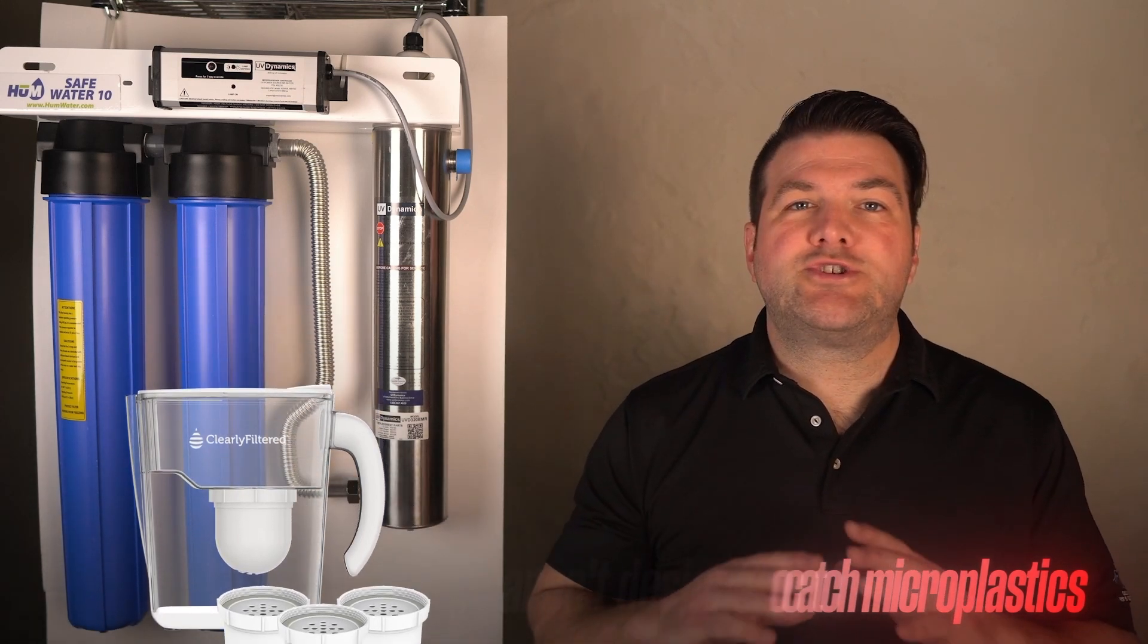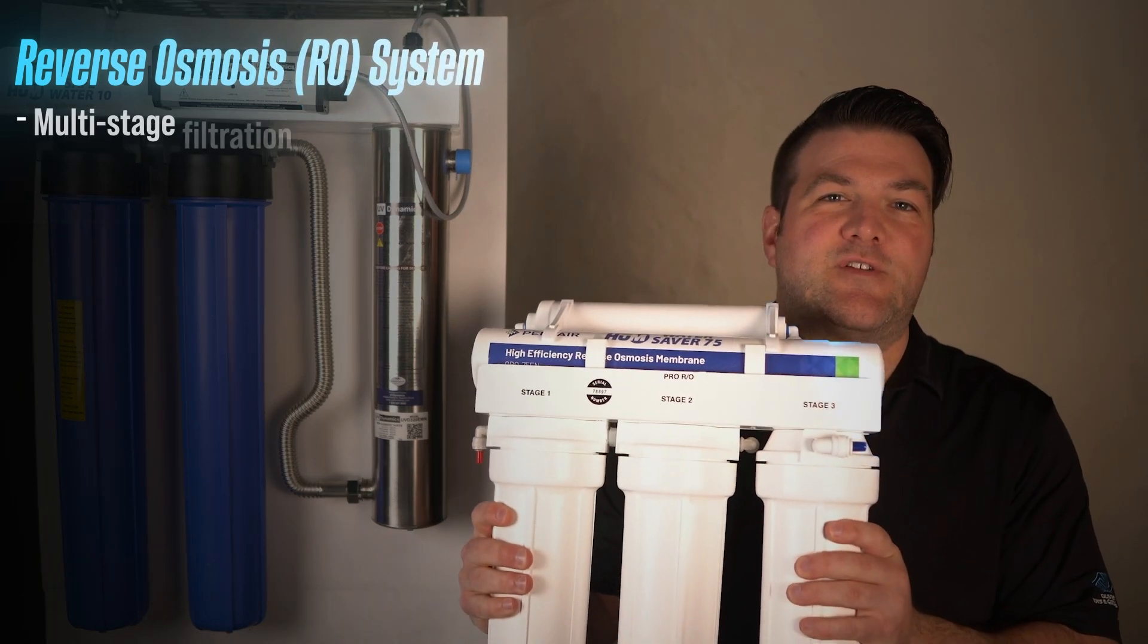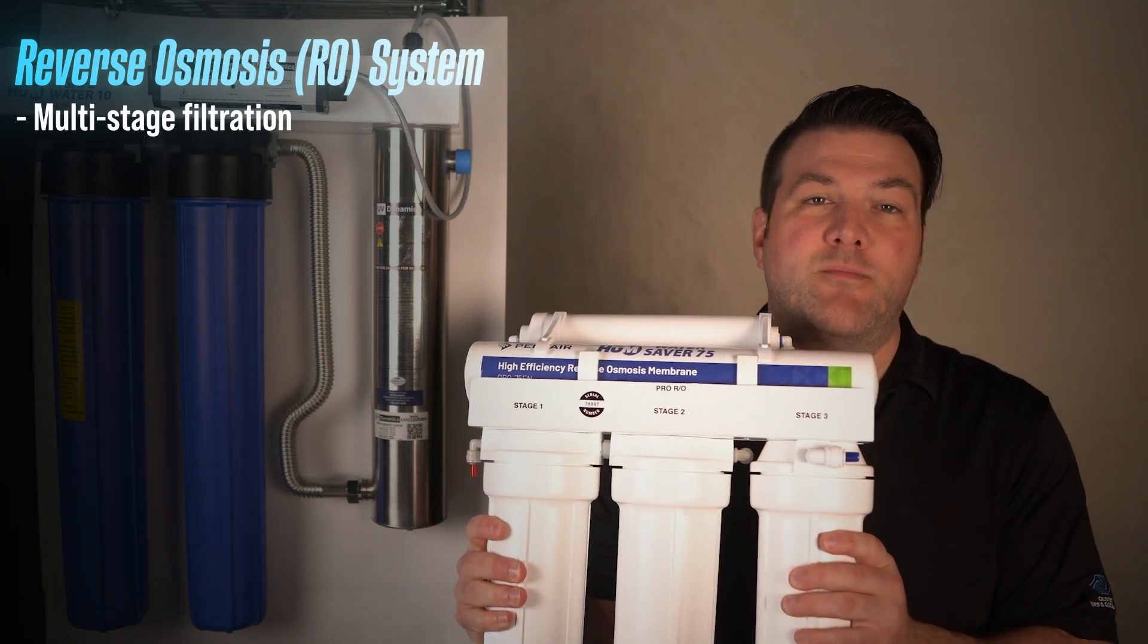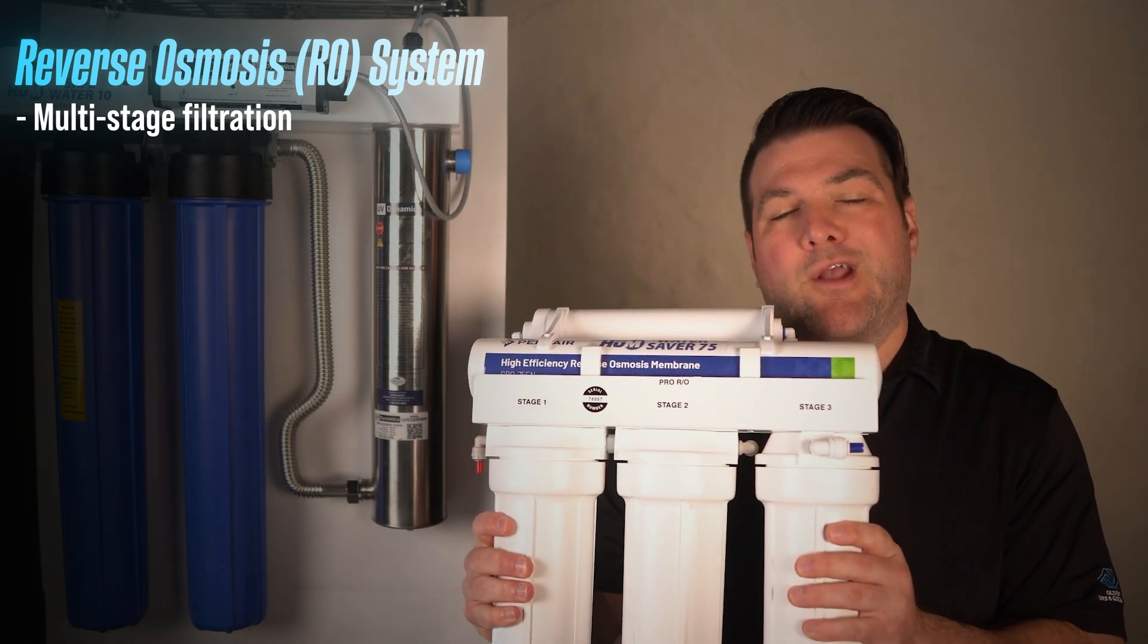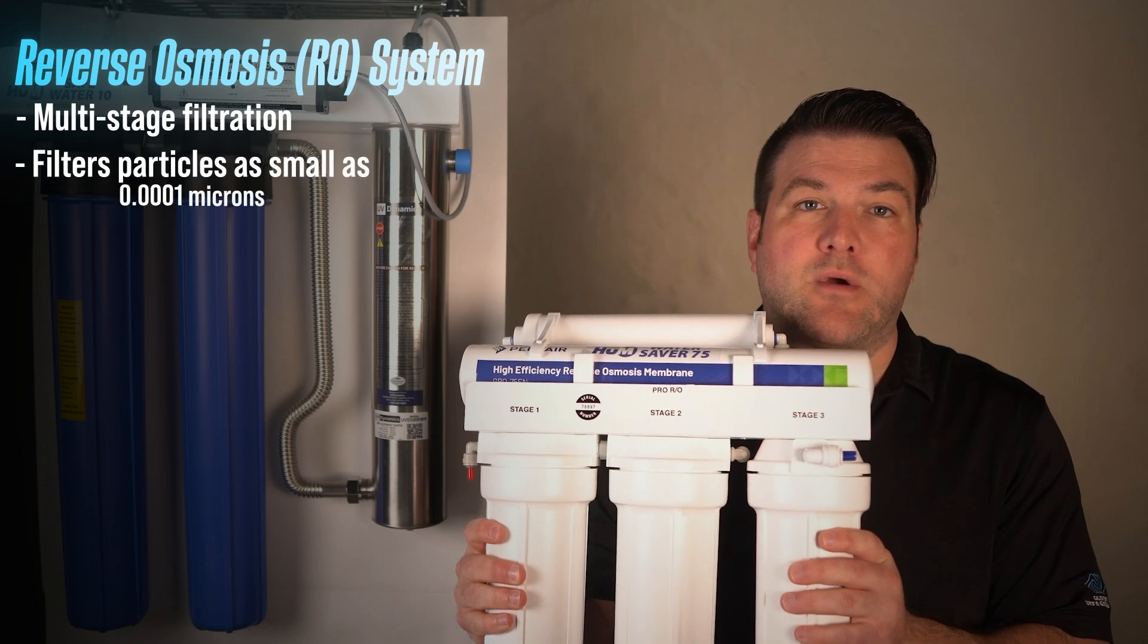What are the best options? If you want to ensure your water is as free from microplastics as possible, you really should consider a reverse osmosis system. A reverse osmosis system like this is a multi-stage filtration system that will remove harmful chemicals like chlorine and lead, but ultimately will also remove microplastics.